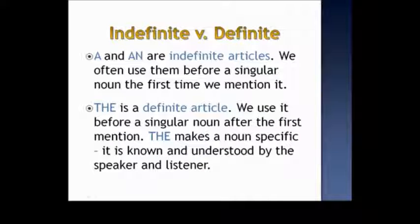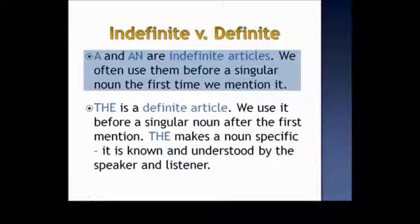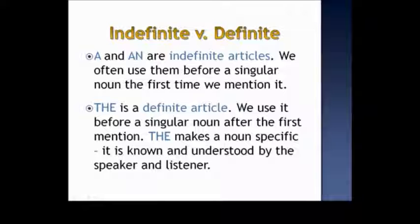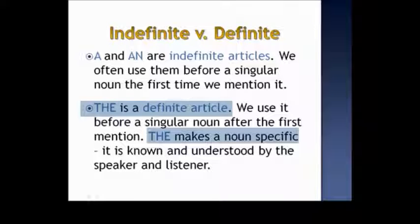Let's begin to talk about how the indefinite and definite articles are different. A and AN are indefinite articles — we often use them before a singular noun the first time we mention it. The is a definite article. We use it before a singular noun after the first mention. The makes a noun specific; it is known and understood by both the speaker and listener. One very big difference is that the definite article THE is used in a specific sense for a specific reference.